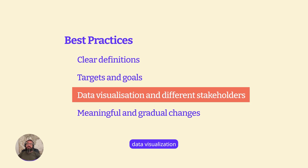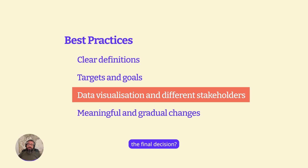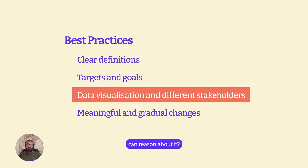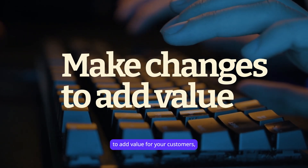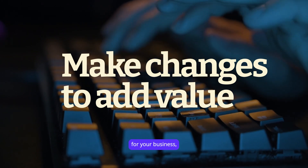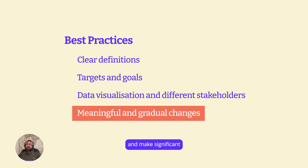For data visualization and different stakeholders — the who. Who are the stakeholders? Who is going to weigh in and who is going to make the final decision? Is the data collected reliably and clearly visualized so that different stakeholders can reason about it? And of course, the when: make sure you're making changes that add value for your customers, your business, or both. Implement changes gradually with staged rollouts, and make significant, noticeable changes in your experiments.